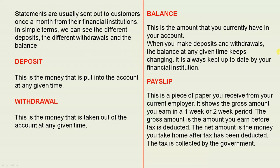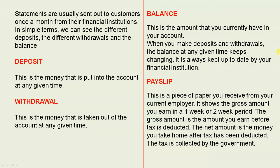Pay slip — this is a piece of paper you receive from your current employer. It shows the gross amount you earn in a one-week or two-week period. The gross amount is the amount you earn before tax is deducted. The net amount is the money you take home after tax has been deducted. The tax is collected by the government.